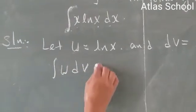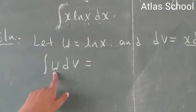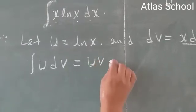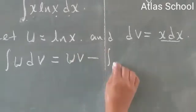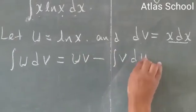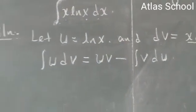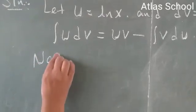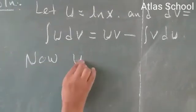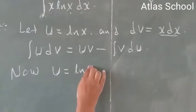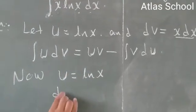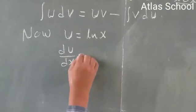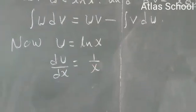To integrate this one, as you have seen in your notes, this can be integrated as u times v minus the integral of v du. Now let's back to our lesson. u is already given which is ln of x. From this one, du by dx, differentiating both sides of the equation, which becomes 1 over x dx.